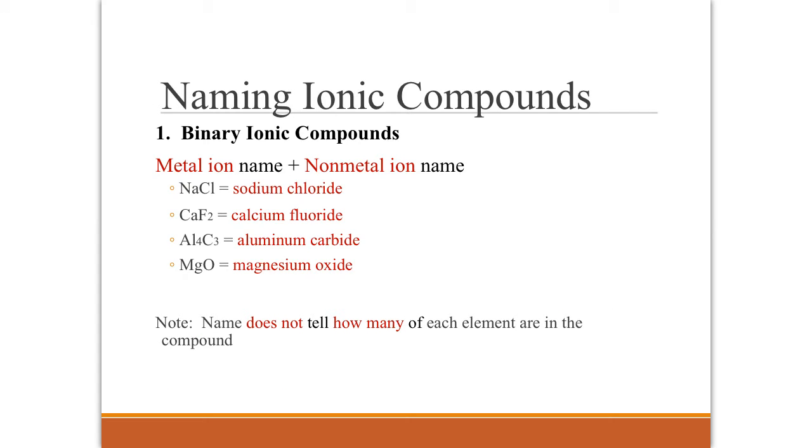So now you know how to name the ions, well how do you name the ionic compounds? So if you have a binary ionic compound, two ions, one positive and one negative, you take the name of the metal ion and the name of the nonmetal ion and put them together. You drop the word ion after it. So the rule is always the metal ion is going to be the element name, the nonmetal ion is going to have the ide at the end. So NaCl becomes sodium chloride. CaF2 becomes calcium fluoride.